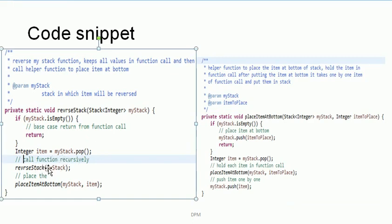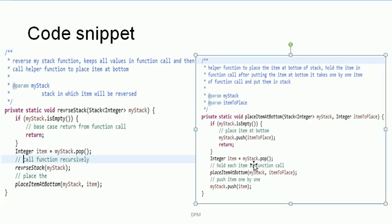Items like 40, 30, 20 and 10 are popped one by one from this algorithm and passed to the place item at bottom function. When an item is passed to this function, it holds all items in its call stack until the stack becomes empty. When the stack becomes empty, it puts the item to be placed at the bottom of the stack, and then all items are pushed back onto the stack, maintaining their original order. In this manner, our reverse stack algorithm works.